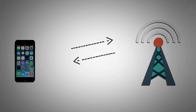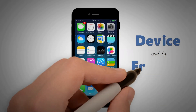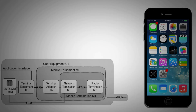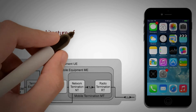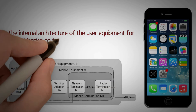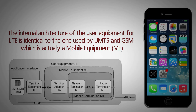The major changes were done in the radio access part, but in order to access the radio, we need to have a device. So before we dive into the architecture, let us understand the device used by an end user. In LTE specification, the mobile device is referred to as user equipment, same as in UMTS. The internal architecture of the user equipment for LTE is identical to the one used by UMTS and GSM, which is essentially a mobile equipment comprising several important modules.